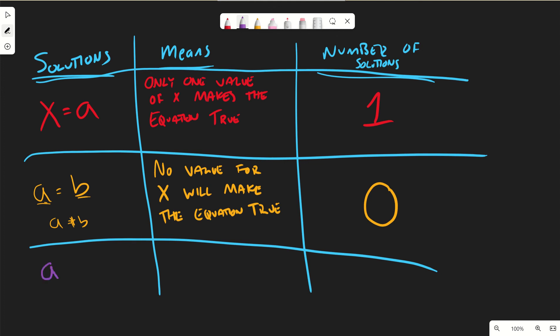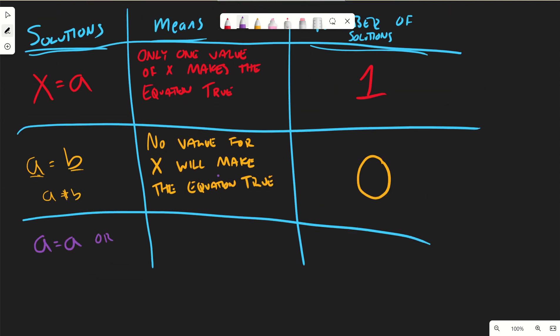And then finally, if I have a equals a, or x equals x. So if I get the numbers all by themselves and they're the same number, or if I get to the point where x equals itself and they're exactly the same, then any value for x will make the equation true. Any value for x will make the equation true. And we'll say that there are infinite solutions to these kinds of problems. When we get to the point where a number equals the same number, there's infinite solutions.